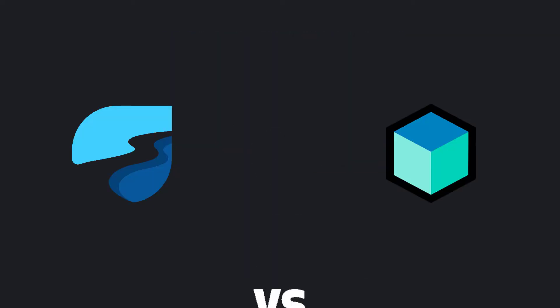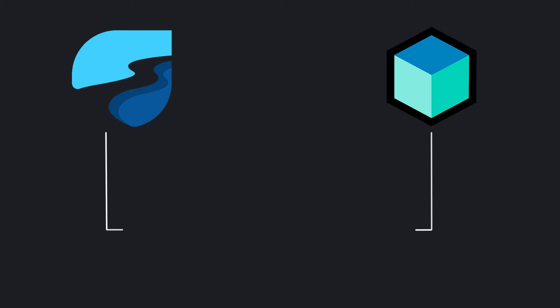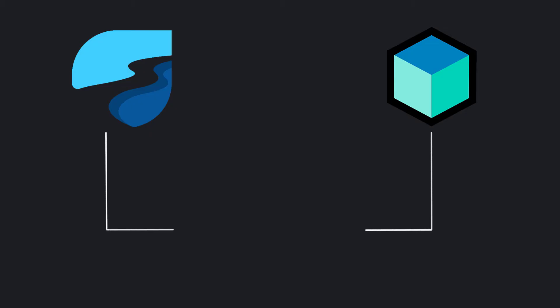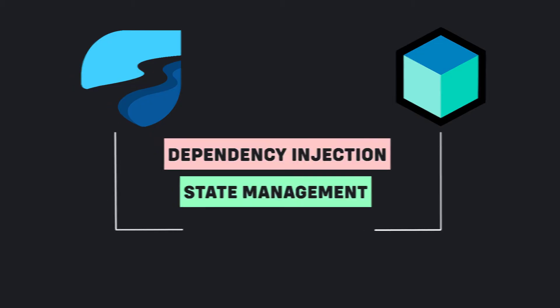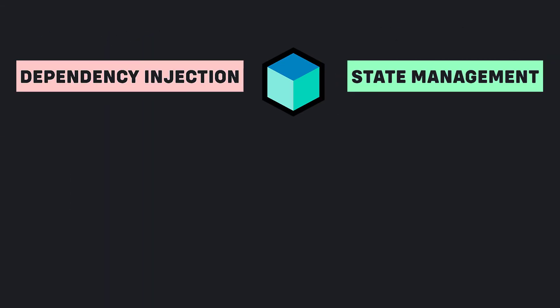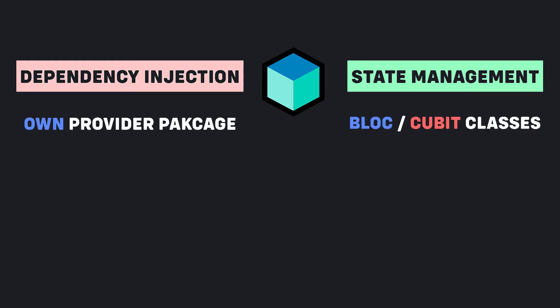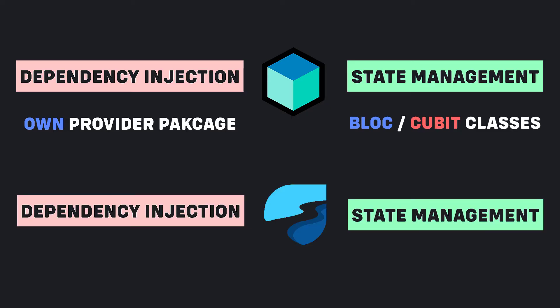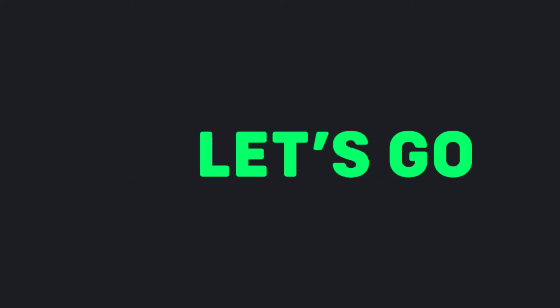Comparing RiverPod and Bloc is not strictly a correct approach. Both of these packages can be virtually split into two parts: dependency injection and state management. Bloc uses its own extensions of the provider package for dependency injection and Bloc or Cubit classes for storing state. RiverPod on the other hand is literally provider 2.0 for dependency injection and has a state notifier package bundled with it for state management.